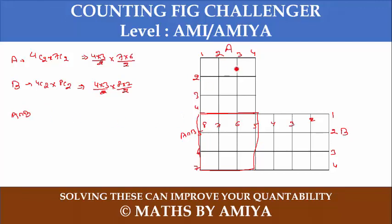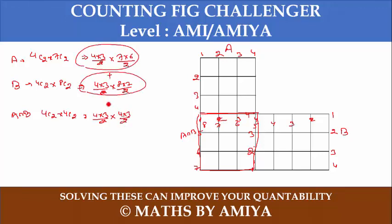For section A intersection B, we have four vertical lines and four horizontal lines, so it is 4C2 into 4C2, which equals four into three by two into four into three by two. Adding section A plus section B and subtracting section A intersection B, we get the answer: 258.